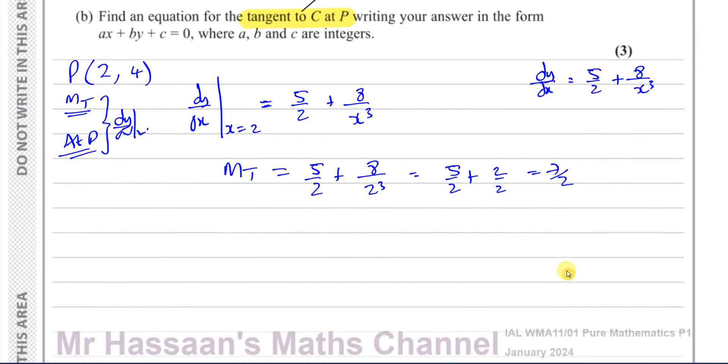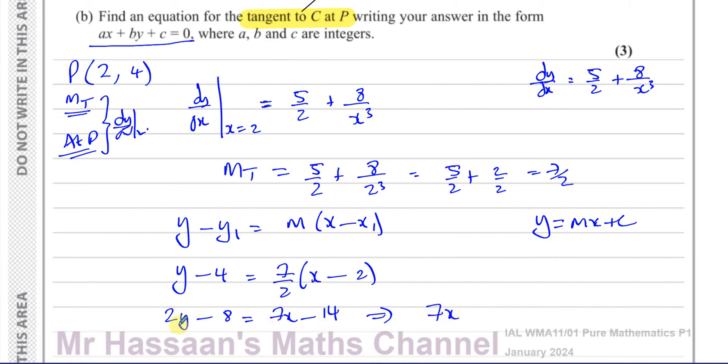So that's the gradient of the tangent at P. Now we can say y minus y1 equals m times x minus x1. Some of you would like to use y equals mx plus c. I personally prefer this, especially for a question where you have the gradient as a fraction. So y minus 4 equals m which is 7 over 2 times x minus 2. If we want to write it in this form where a, b and c have to be integers, I'm going to multiply by 2 to get rid of the fraction. So this becomes 2y minus 8 equals 7x minus 14. I'll write this as 7x minus 2y, and minus 14 plus 8 is negative 6, and that equals 0.